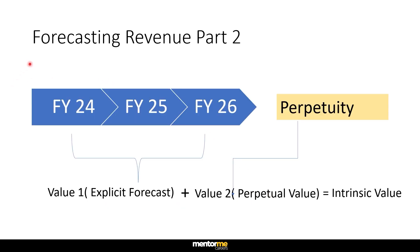Once you have broken down the revenue into price times quantity, the research has to happen on the price and the quantity. If you directly jump to breaking down revenue without doing the industry and competitor analysis steps first, it will be very difficult to get any conviction out of that third step. Now let's look at the revenue structure. Once we forecast — say we are sitting in FY23 and forecasting for three years — three to five years is the max explicit forecast you can manually do. Beyond that, you will have to assume something for the perpetual future using various models: a two-stage or three-stage model, depending on whether the company is in a growing or mature industry. When you combine the perpetual value and the forecasted free cash flow, that gives you the intrinsic value.